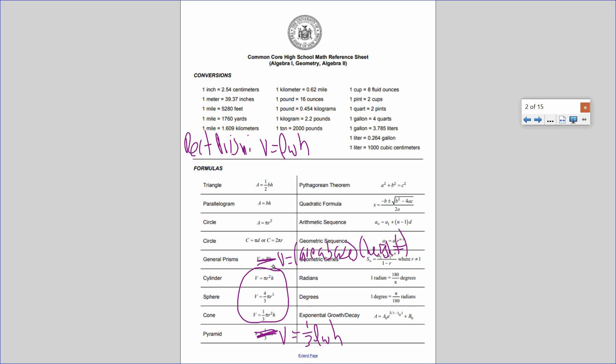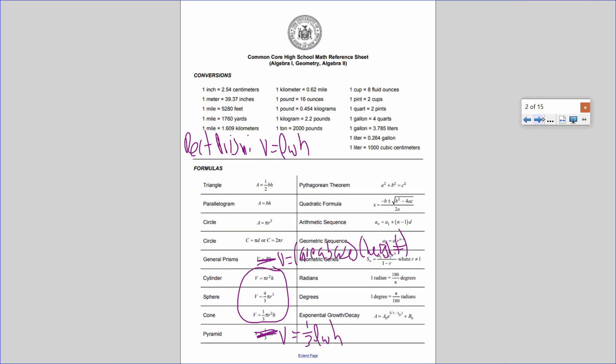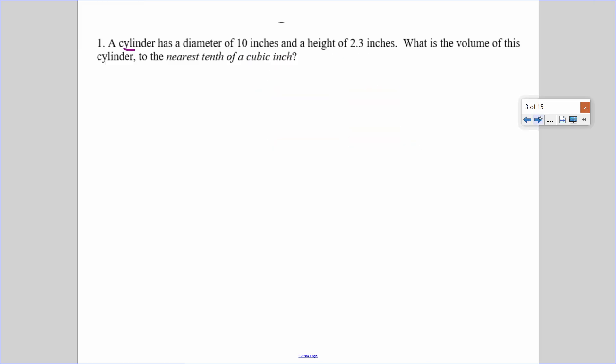So there's just a couple things I want to talk about today. This will be a practice day. I guess I'll go over number one. It's a cylinder, so I go to my reference sheet and I look at cylinder, and it's V equals pi r squared h. Drawing a picture is always helpful. The diameter is 10, the height is 2.3. The diameter is 10, and the radius is 5.